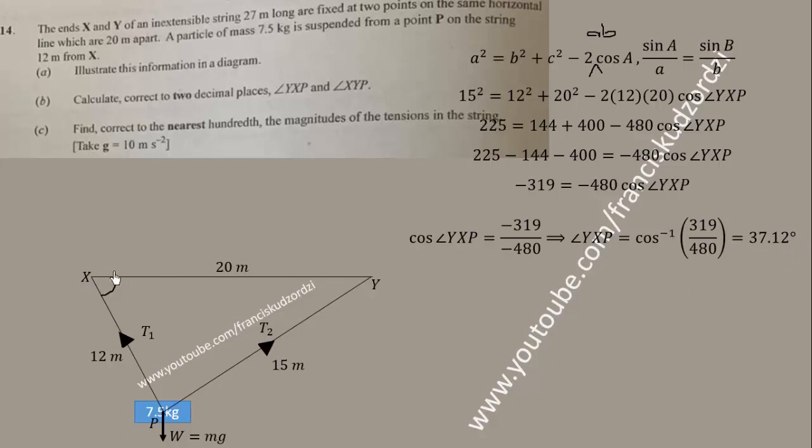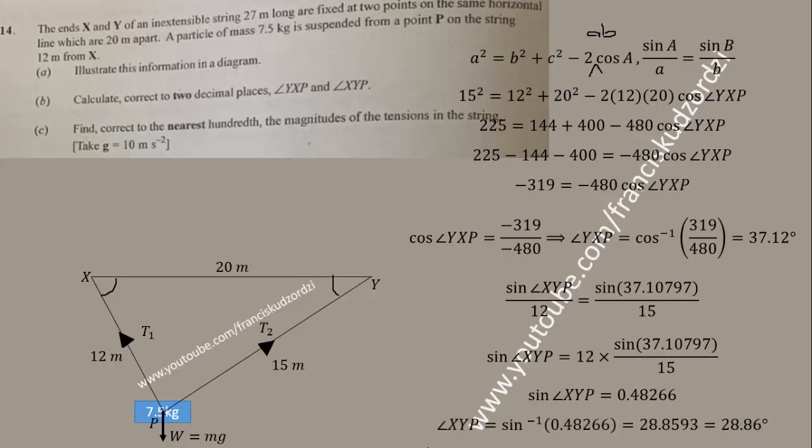We've managed to find this angle. Now to find the other angle we can quickly apply the sine rule. Sine A over a equals sine of angle B over b. We get sin(∠XYP)/12 = sin(37.12°)/15. Simplify by multiplying both sides by 12. That gives us sin(∠XYP) = 0.48266. Take sine inverse of both sides to obtain the angle correct to 2 decimal places as 28.86 degrees.